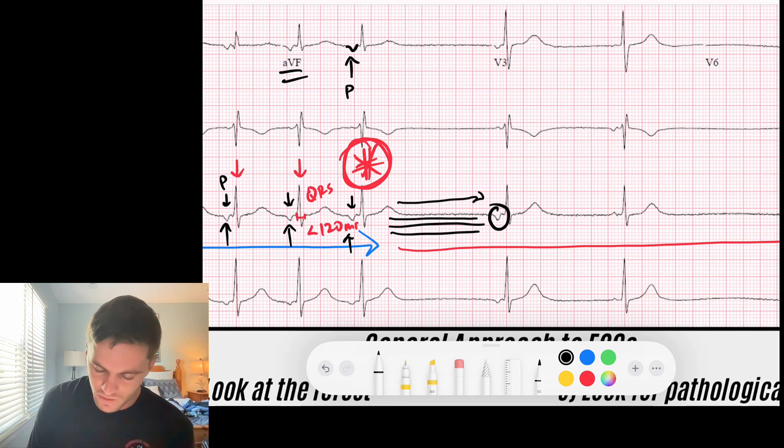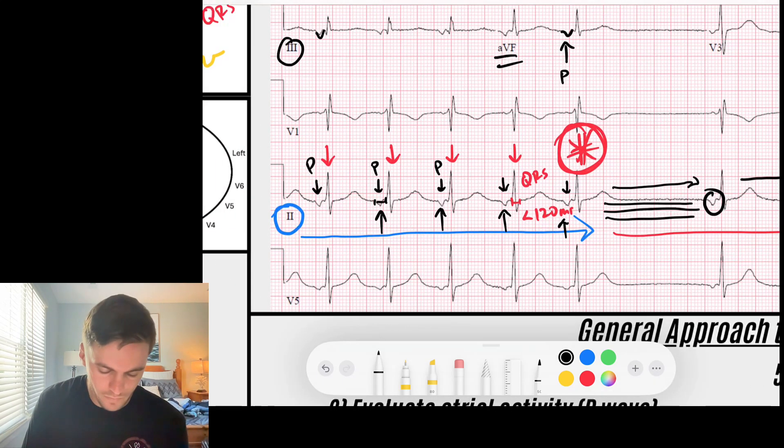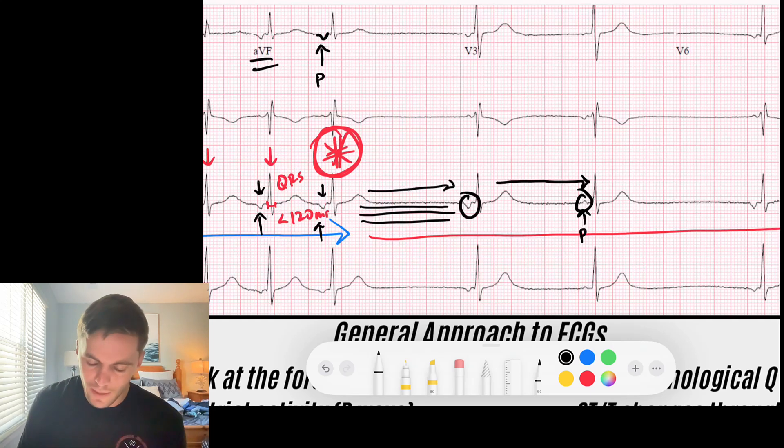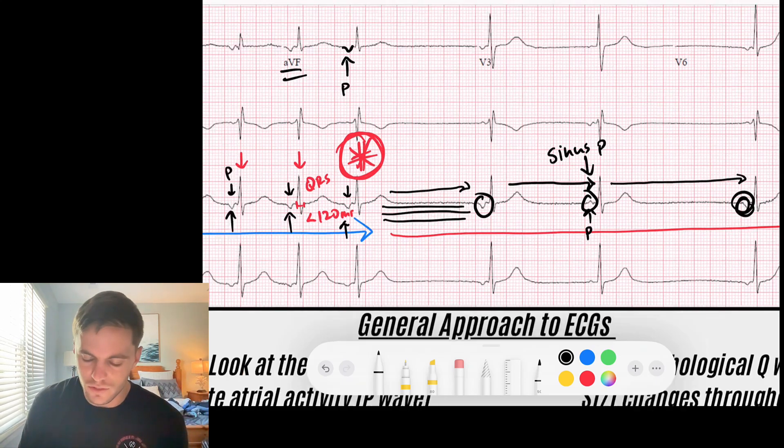Then look, we get another ectopic beat. We get a long pause, and it actually seems like this P wave looks a little bit different than a normal P wave. It might actually be a sinus P wave, because this is lead two and this P wave is upright, so we might actually have a sinus P wave.